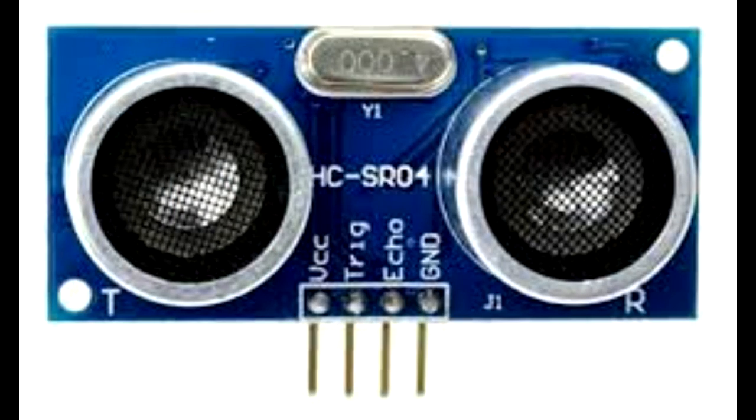Ultrasonic sensor is a device which is used to measure the distance from the object to the device. It contains a transducer which acts as a transmitter and receiver.